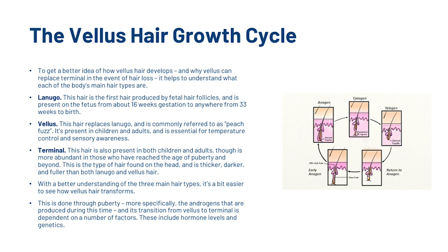Then we've got vellus hair, which replaces lanugo and is commonly referred to as peach fuzz. It's present in children and adults and is essential for temperature control and sensory awareness. Then we've got terminal hair, also present in both children and adults, though more abundant in those who have reached puberty and beyond. This is the type of hair found on the head and is thicker, darker, and fuller than both lanugo and vellus hair.